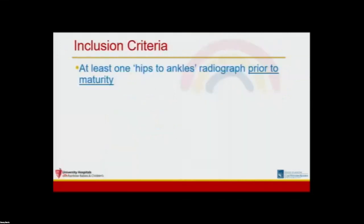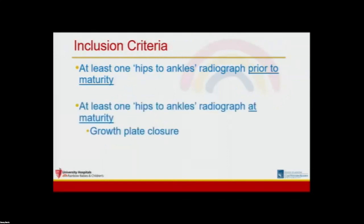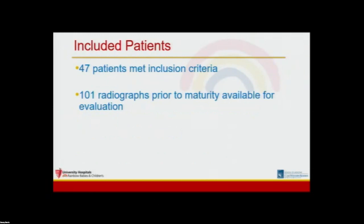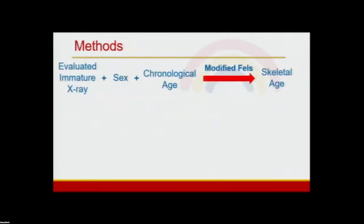This was a retrospective study. We reviewed our institution's EMR to identify patients meeting three criteria: first, at least one hips-to-ankles radiograph prior to maturity; next, a second hips-to-ankles radiograph at maturity, defined by growth plate closure assessed radiographically; and finally, unilateral lower extremity disease. We were able to include 101 prior-to-maturity hips-to-ankles radiographs from 47 patients. To produce a skeletal age, we applied the modified Fells knee skeletal maturity system to each x-ray taken prior to maturity. The modified Fells requires evaluation of seven radiographic parameters, sex, and chronological age.